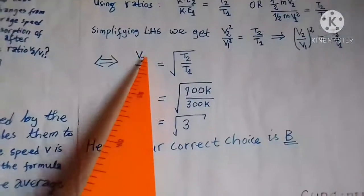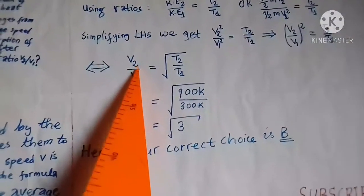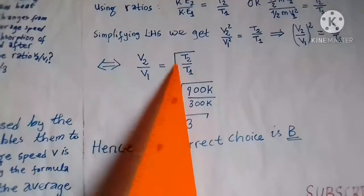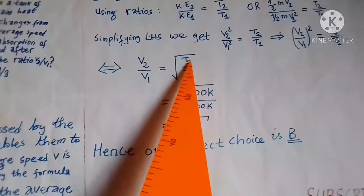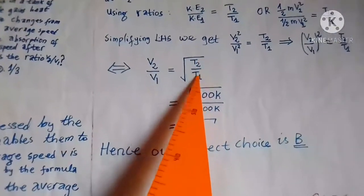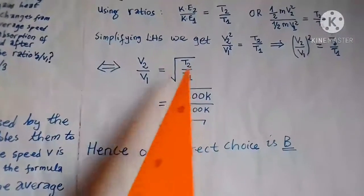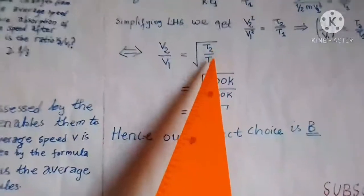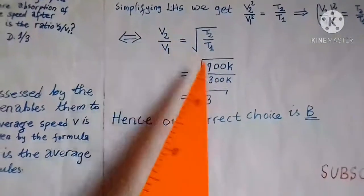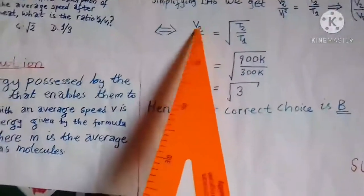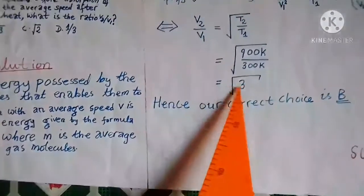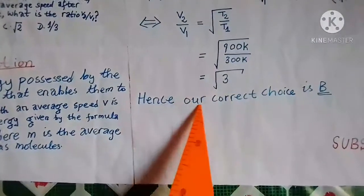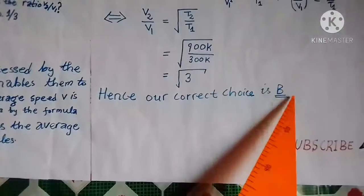If and only if you have V2/V1 to be equal to the square root of T2 divided by T1. If we substitute for T2 and T1 in this equation, we get V2/V1 to be equal to root 3. Hence our correct choice is B.